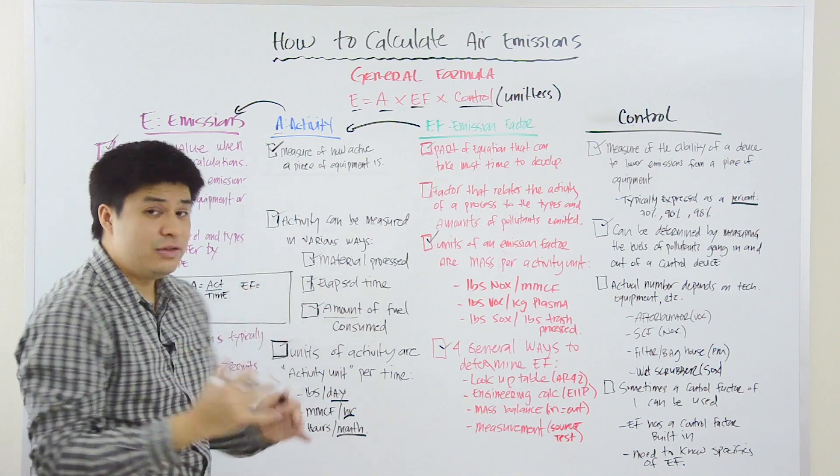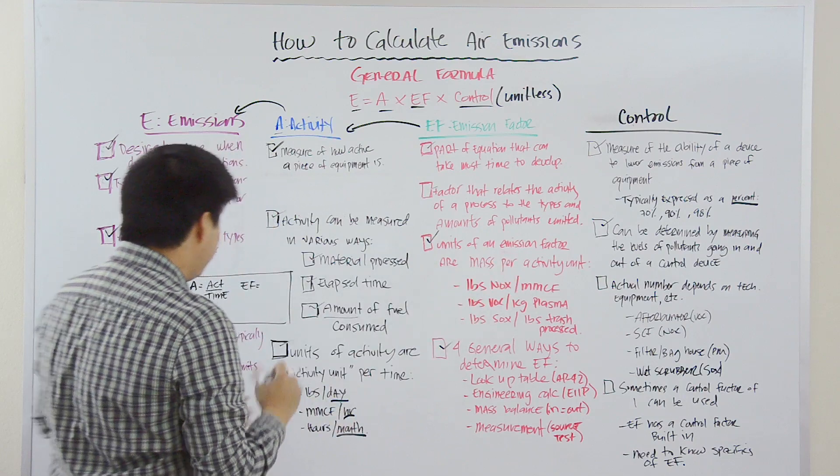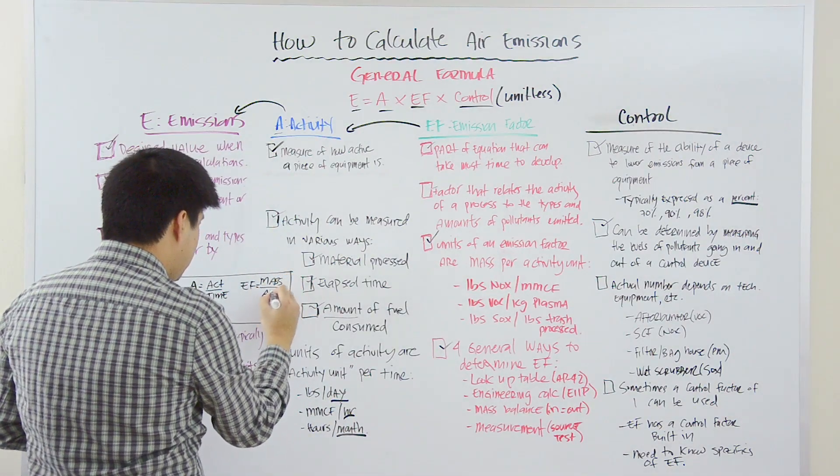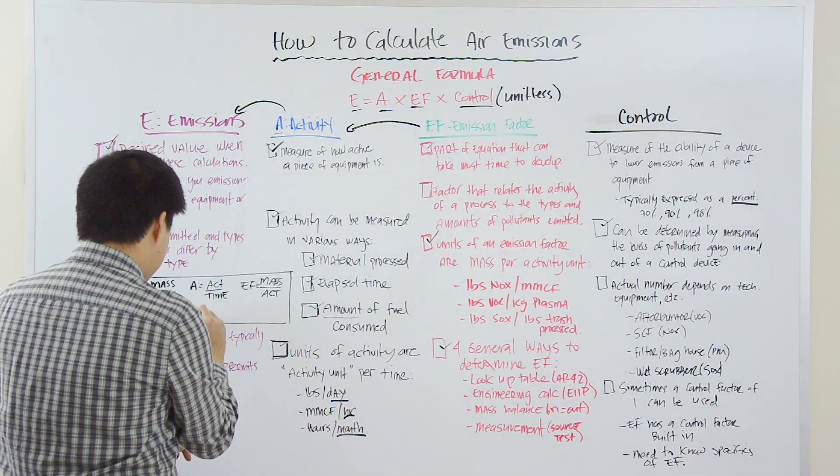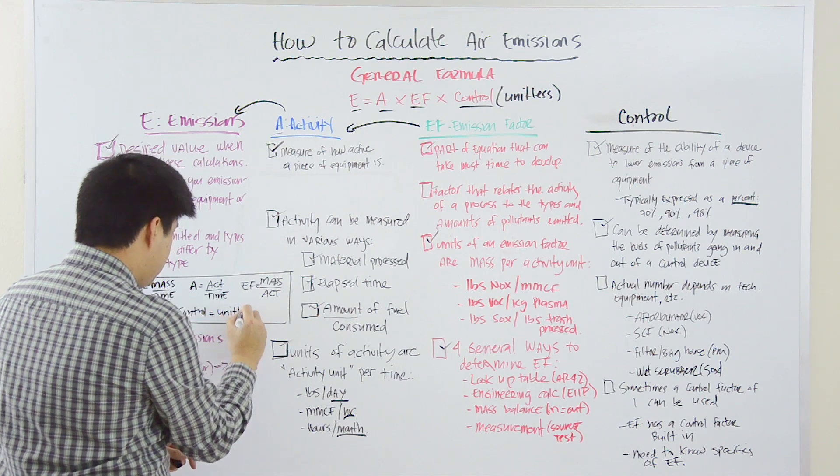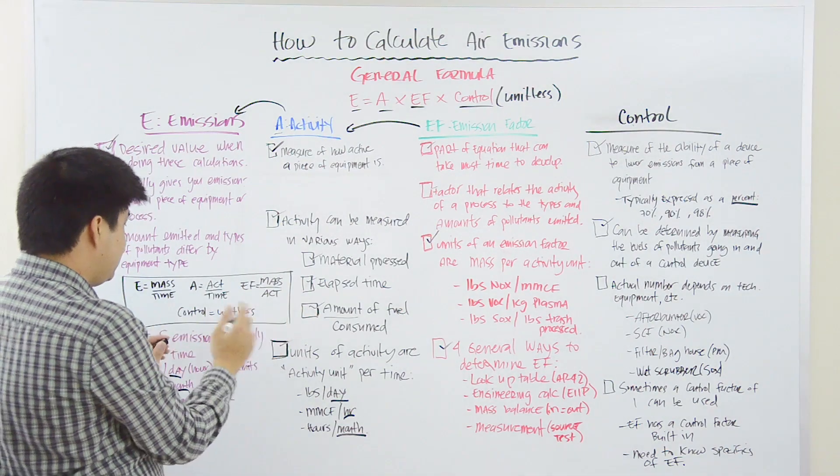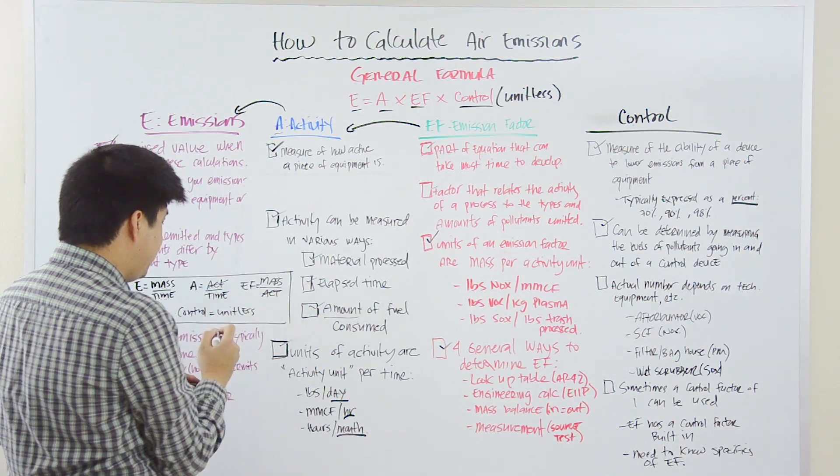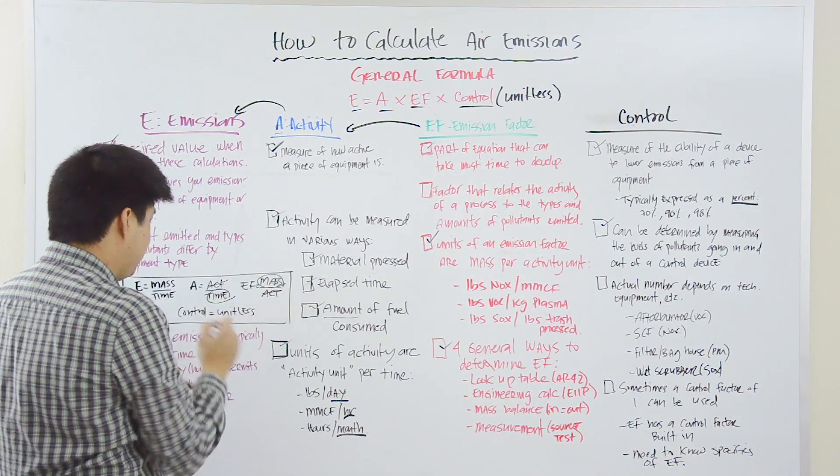EF, the units of your EF will be mass per activity unit. And so, if we just do the math here, we can see, and we cancel the units, we can see that activity cancels with activity unit. This is unitless. Therefore, you have mass per time.